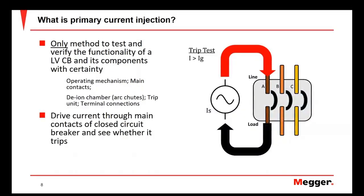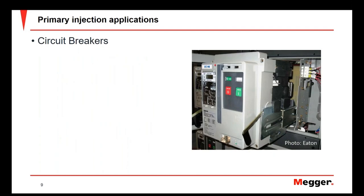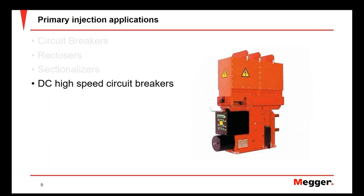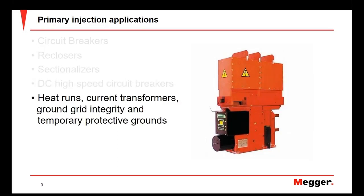Whenever we do this type of test, we drive current through a closed circuit breaker through the main contacts and verify that the overcurrent function is going to react as intended, or trip, whenever we push current through the breaker. Primary injection also applies to reclosers and sectionalizers that have overcurrent functions, DC high-speed circuit breakers, and can also be used to do heat runs, test current transformers, verify the integrity of ground grids, and test personal protective grounds.